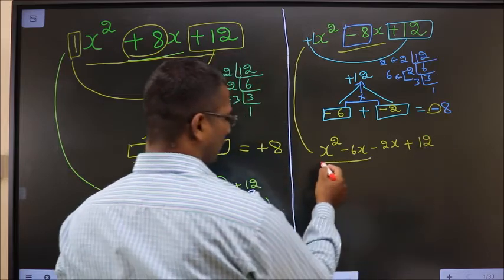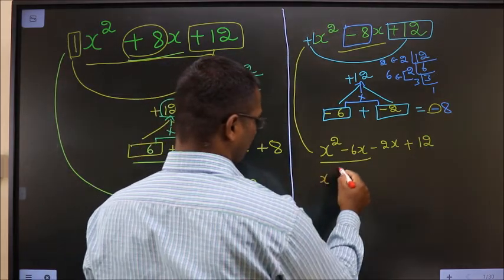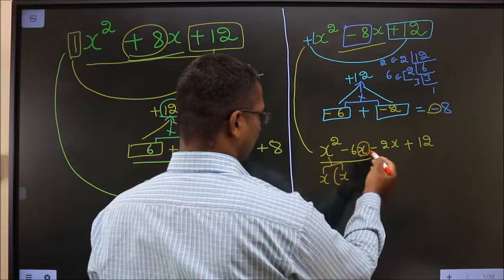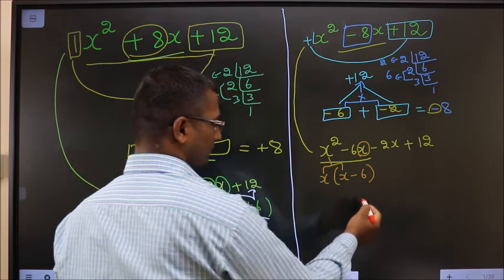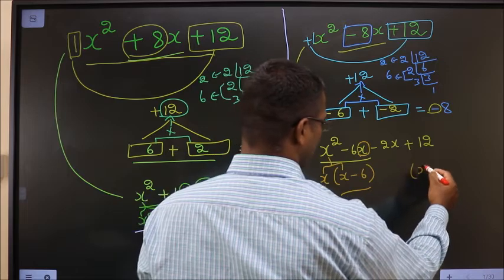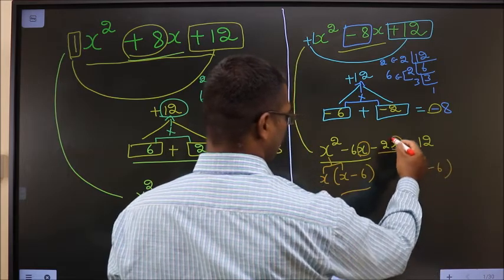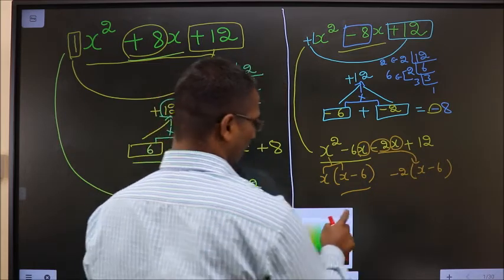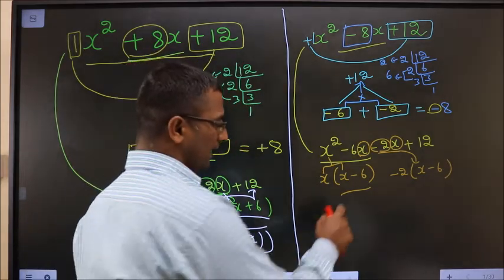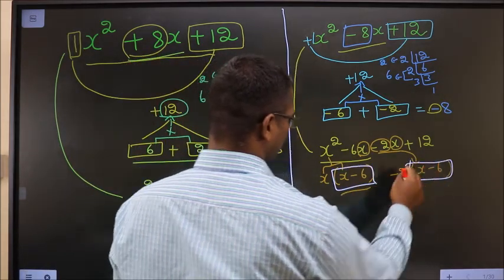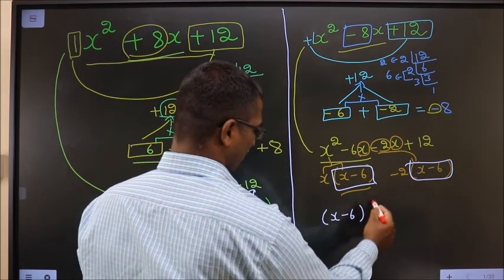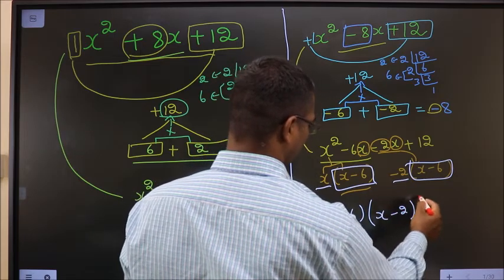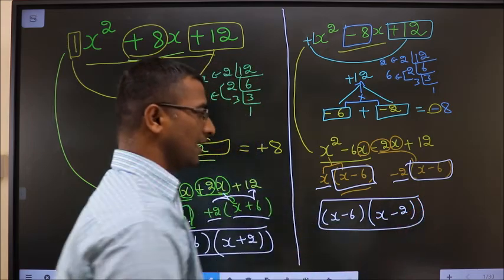Now, what can I take common from here? x. From x squared, x has gone out, so another x will be inside. This x has gone out, leaving you with 6. Here you got x minus 6, so here also it should be x minus 6. From this, x has gone inside, so outside should be minus 2. Take x minus 6 common from both — here left with x and here left with minus 2. Thus, I have factorized and this is the answer.